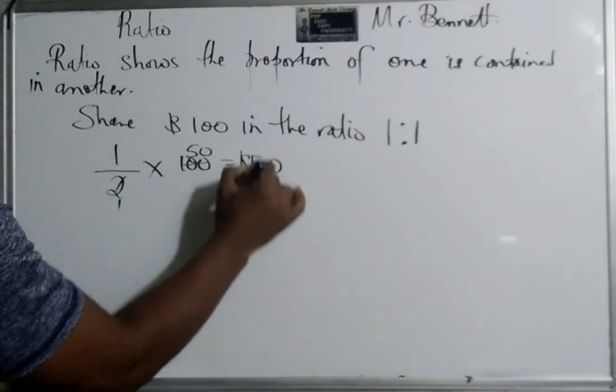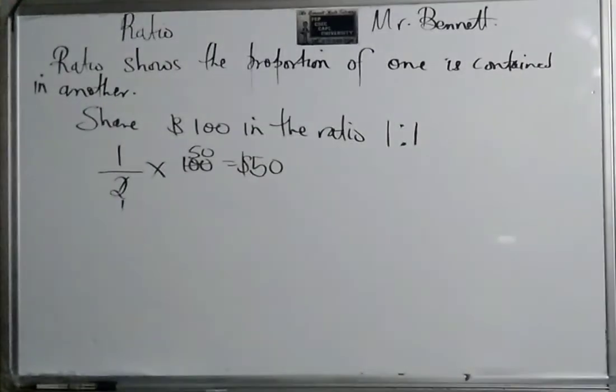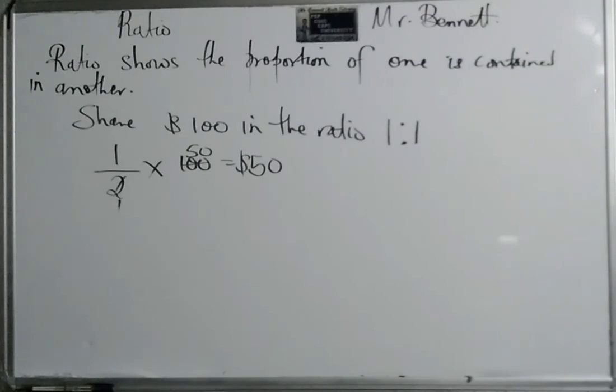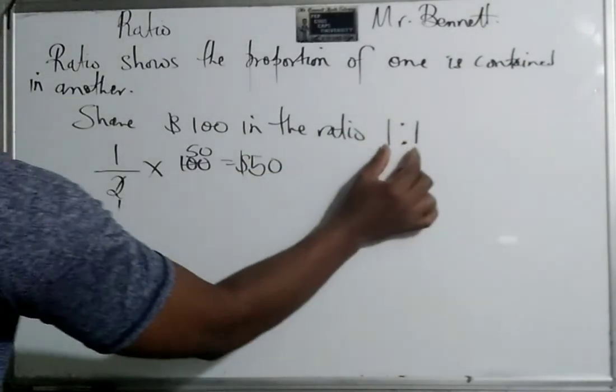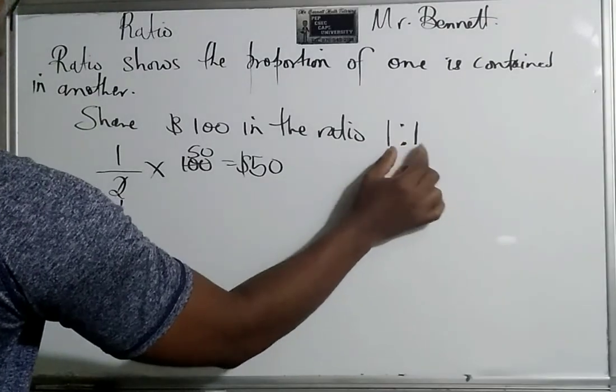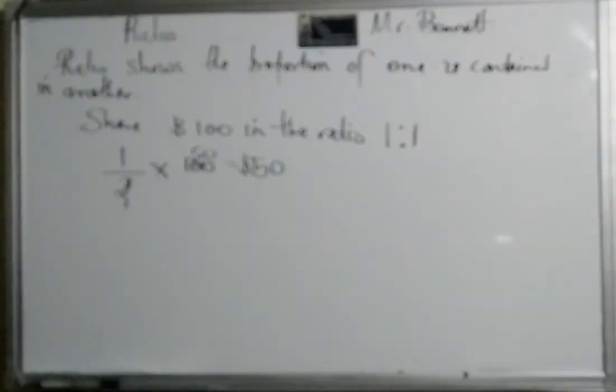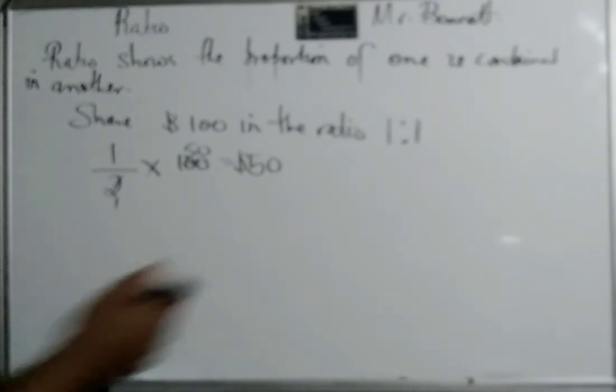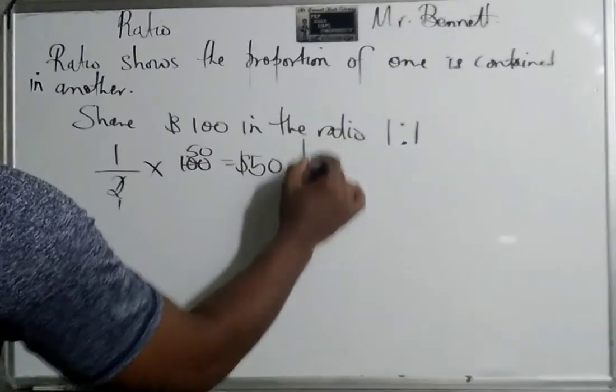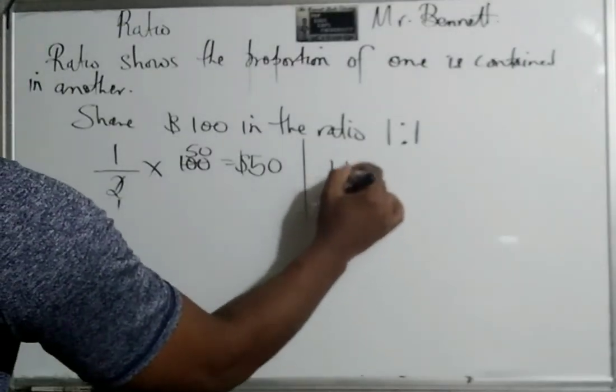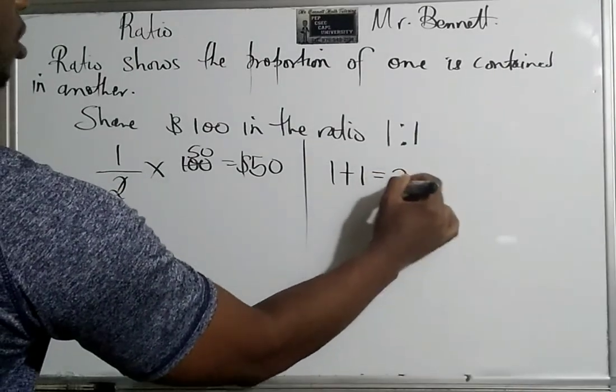So it's a half times 100, so you would get 50 dollars and your brother or sister would get 50 dollars. So basically it's proportionate. This tells us that this is equal. Another way that we could have looked at it is saying let us find the total shares. So it is one plus one is equal to two.